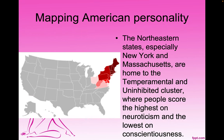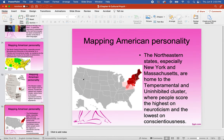The northeastern states, especially New York and Massachusetts, are home to the temperamental and uninhibited cluster, where people score the highest on neuroticism and the lowest in conscientiousness. If you want friendly people, go to Wisconsin and Minnesota. And that's the end of chapter 6.